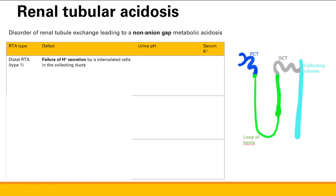Now we go to renal tubular acidosis. This is a disorder of renal tubular exchange leading to non-anion gap metabolic acidosis. You can get acidosis from defects in either hydrogen secretion or bicarb reabsorption. There are three locations where this can happen. The first is distal renal tubular acidosis — when H-plus secretion fails. If your alpha-intercalated cells in the collecting duct do not secrete H-plus, it stays in the blood and causes acidosis.